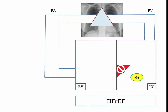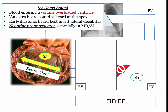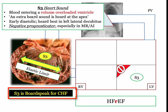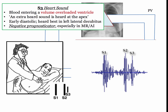Since the left ventricle is not moving an adequate volume of blood into the systemic circulation, there is an increase in left ventricular end diastolic volume and pressure. That increase in end diastolic volume will be characterized by an S3 heart sound. When a vignette mentions the presence of an S3, they are telling you the patient has heart failure.